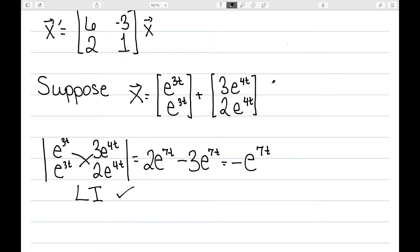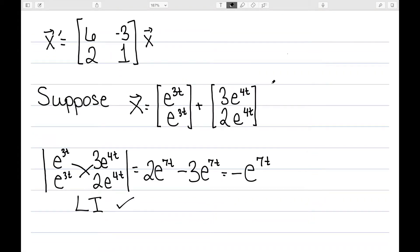Looking back at my previous example, my Wronskian was negative e^(7t). And no matter what value you pick for t, that will never be zero. So these vectors do satisfy my two conditions.